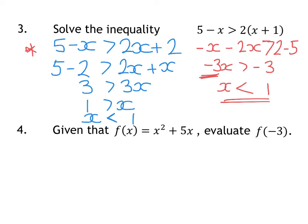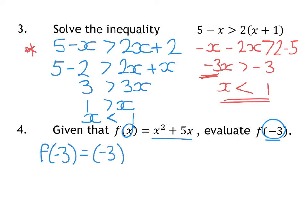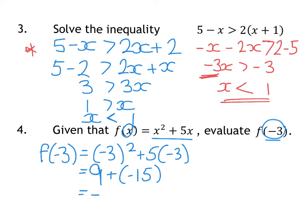Question 4 is functions. f of x equals a given function, and then it says f of minus 3. So x is changing to minus 3 — we replace x with minus 3. So you've got negative 3 squared plus 5 times negative 3. Negative 3 squared is 9, and 5 times negative 3 is minus 15. So you've got 9 take away 15, which is minus 6. That's your answer.